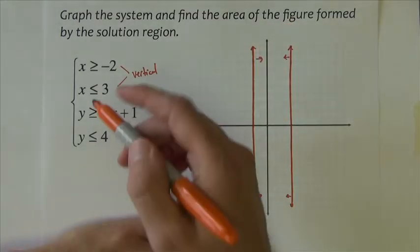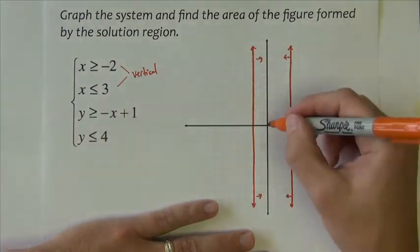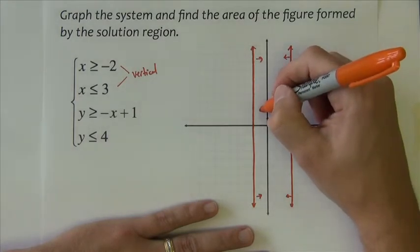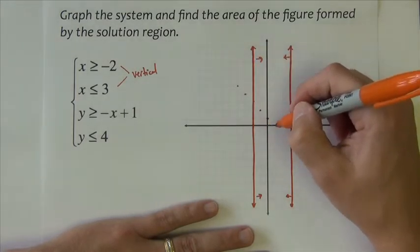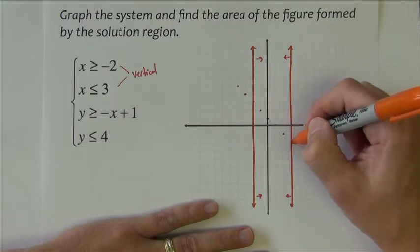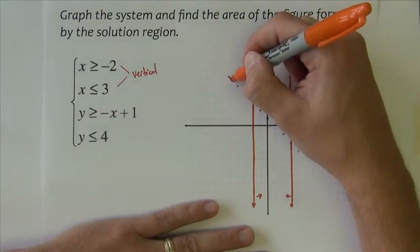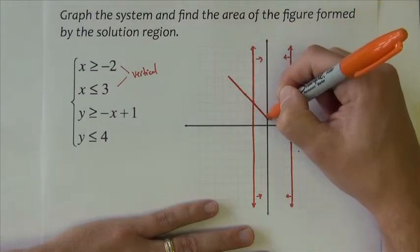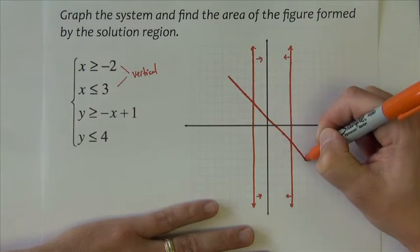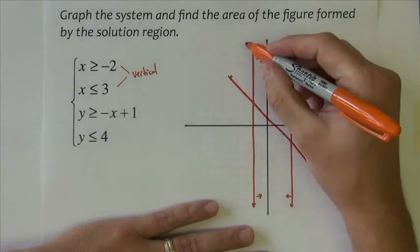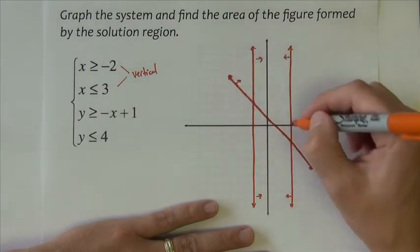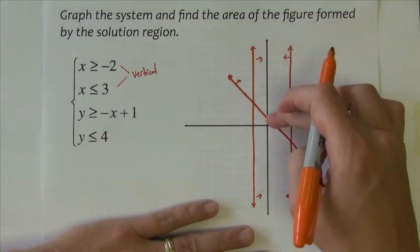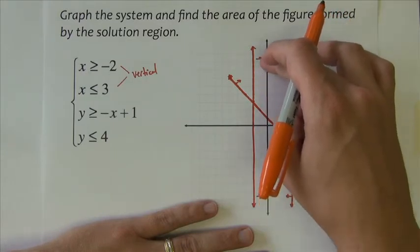Now, y is greater than negative x plus 1. It starts at 1, slope's negative 1, which means it comes down like this. I want greater than, which means it's going to shade everywhere above. So we are between the two lines and above the slant line. So right now we're restricted right in here.